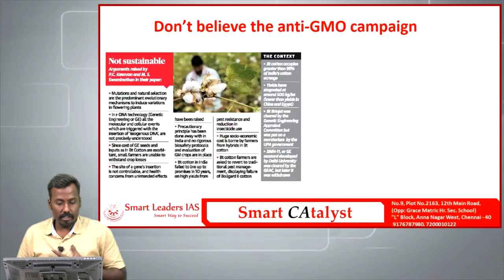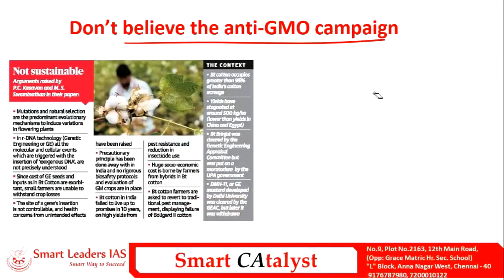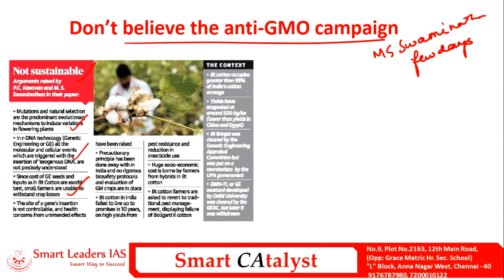The next article is titled 'Don't Believe the Anti-GMO Campaign', written as a response to an article by M.S. Swaminathan. In that article, Swaminathan argued that GM crops are not sustainable in India, citing natural and evolutionary reasons, recombinant DNA technology used in developing GM crops, cost of GE seeds, lack of awareness about unintended effects, absence of rigorous biosafety protocols, failure of BT cotton, socioeconomic costs to farmers, and reappearance of pests in BT cotton. The author of this article counters these claims.